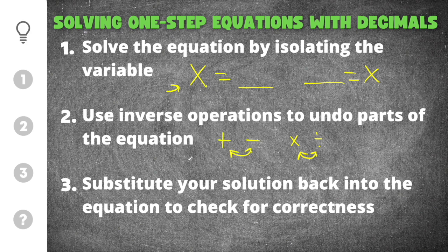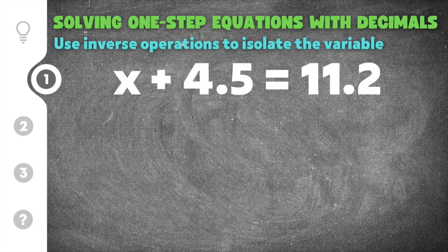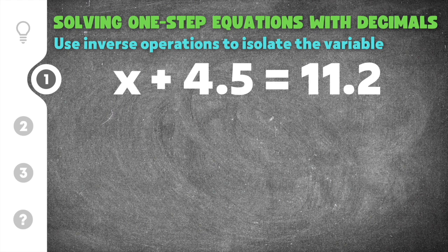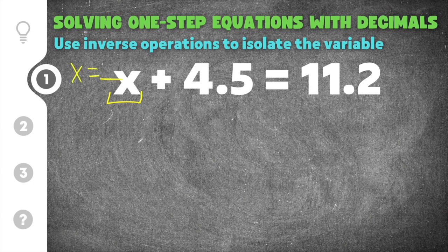Let's go ahead and get started with some practice problems on solving one-step equations with decimals. Now this first one gives us x plus 4.5 equals 11.2. Remember what we're trying to do is we're trying to get x by itself on one side and numbers on the other side of the equation. On this side of the equation we have our x and we have a plus 4.5. Now we need to get rid of this plus 4.5 because we want just x on this side by itself.